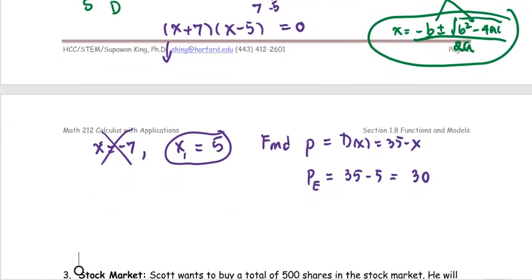I got my x_e, I got my p_e, so the equilibrium point would be (5, 30) as the answer.